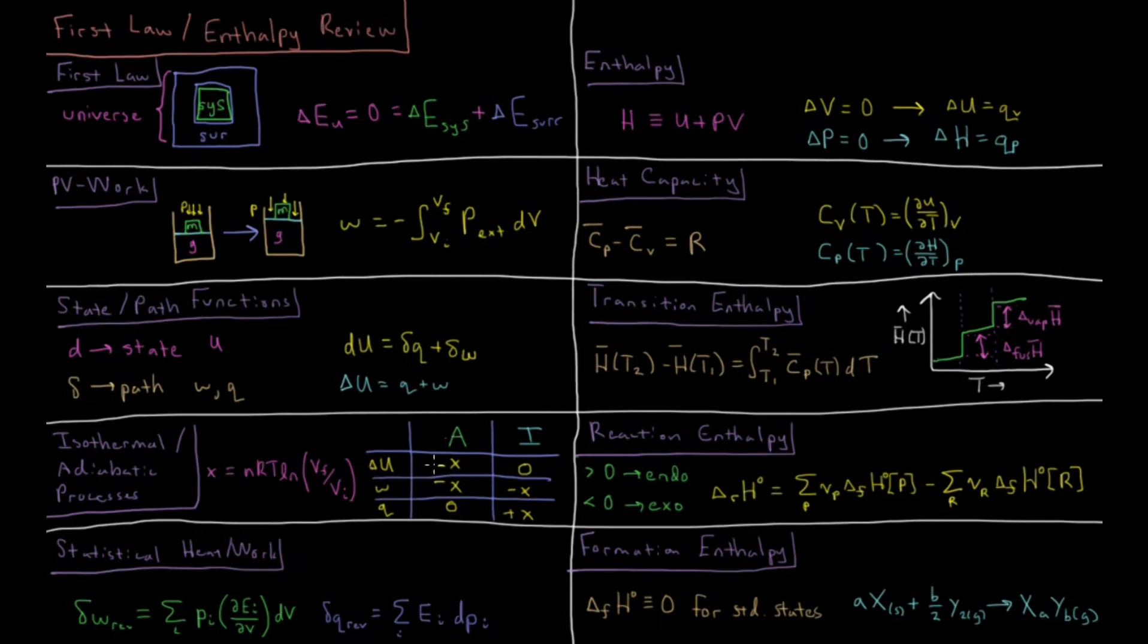In adiabatic processes, the heat involved in the system is zero. There's no heat given in, so the work done is minus X and the change in internal energy is the sum of those two, which is minus X.